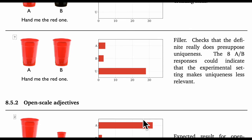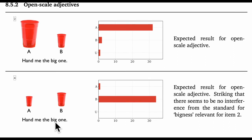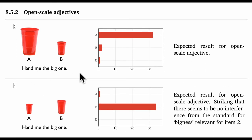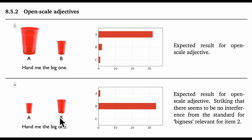Next, the experiment had one clearly open-scale adjective, which was big. For hand me the big one, we got the expected results for one really big cup next to a smaller one. And we also got the expected result when we changed the context so that the previously non-big cup was now the big one in that new context. So this is great in terms of supporting the context-dependent standard setting approach for these totally open adjectives.